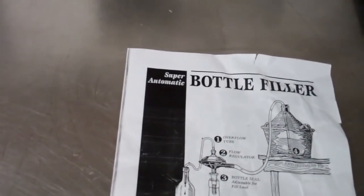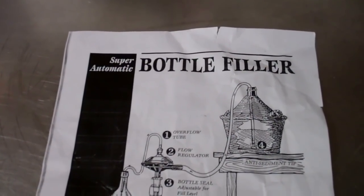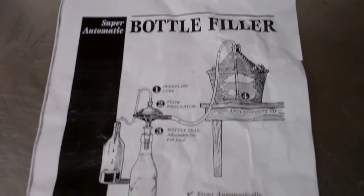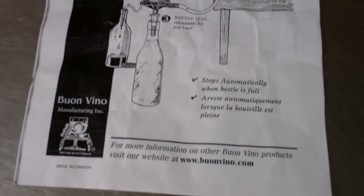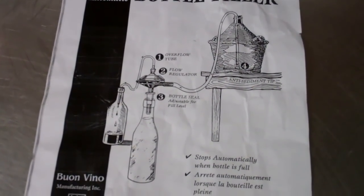But this will do the trick. So there you go. Here's the instruction sheet for it. It's a Buon Vino Super Automatic Bottle Filler. And again it's available at most of your home brew supply stores or wine making stores.